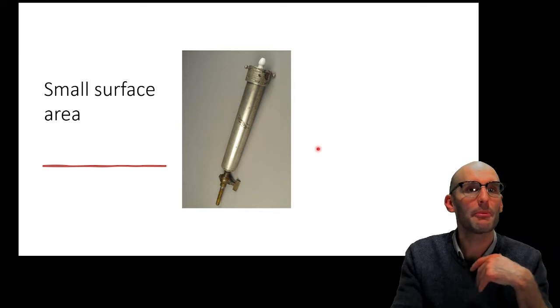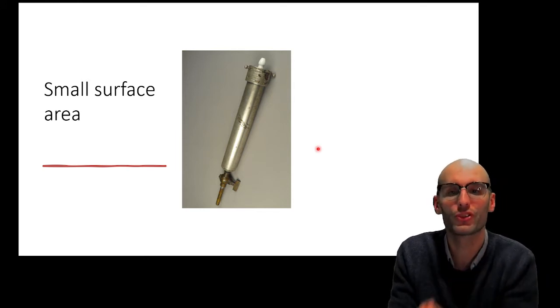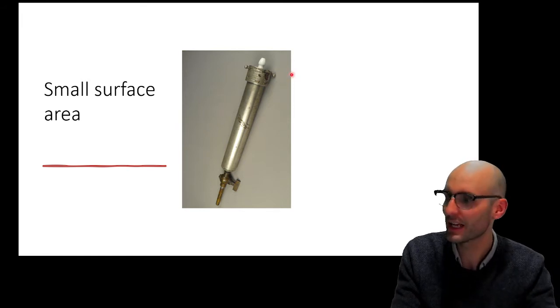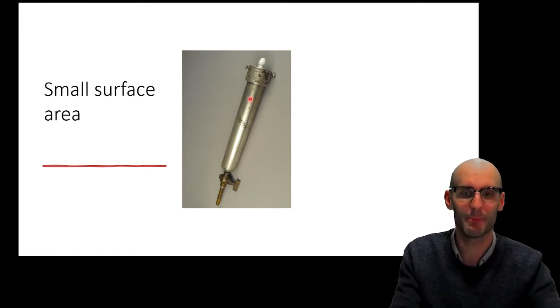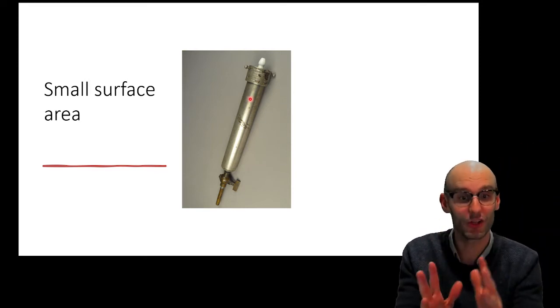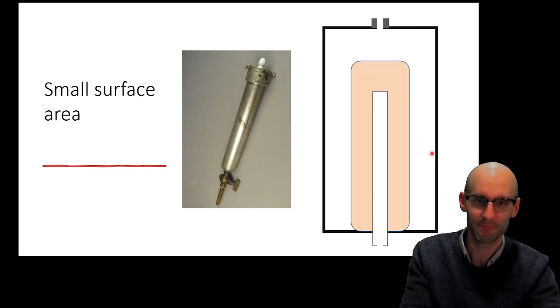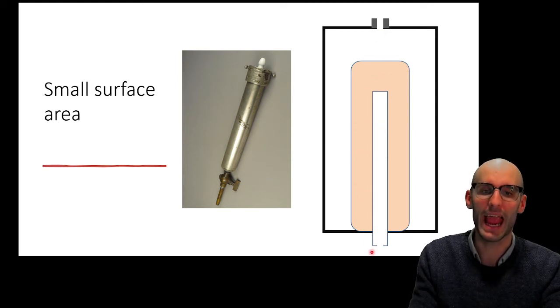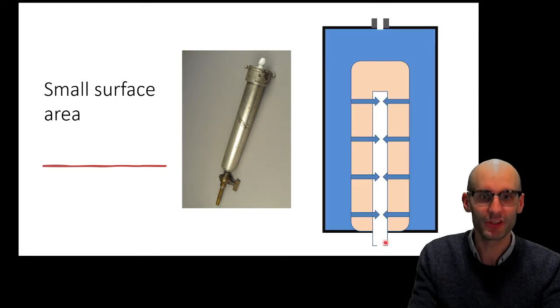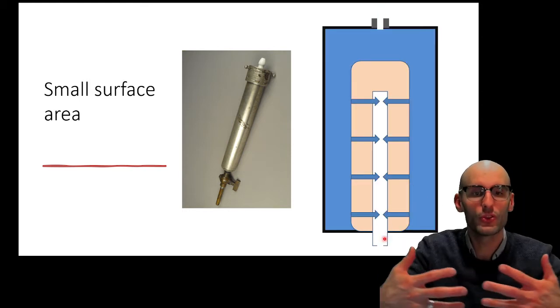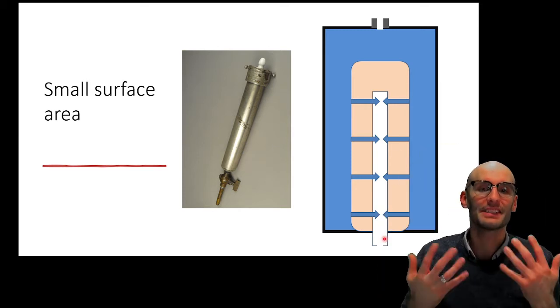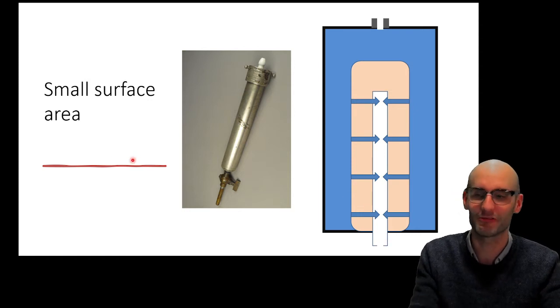So how did they overcome the small surface area problem? So here's a picture of an actual Chamberland filter. And it may look like there's not a lot of surface area in here. But let's cut that in half and have a look at the innards of the filter. It looks like this. So we've got a fluid intake here. Then we've got our porcelain filter here. And then we have a fluid outflow here. So the liquid comes in here. It fills up. And then it goes through the porcelain from all around it. It surrounds it. So this actually has a very large surface area that allows the filter to work really well.